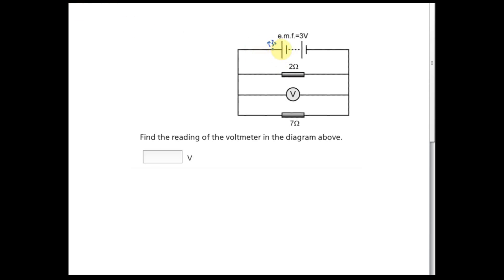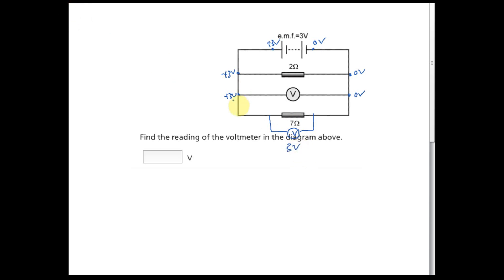Now, if this is 3 volts, we can assume this point is positive 3 volts, and here is 0 volts. How about the potential here? Positive 3, right — because there's no resistance. Then how about here? Zero, right. So what's the potential difference? The answer is 3 volts. If you put a voltmeter here, the reading is 3 volts. Here is also positive 3 volts, and here zero volts, so the reading is still 3 volts. This is a parallel circuit — for parallel circuits the readings of the voltmeter are the same for all resistors.